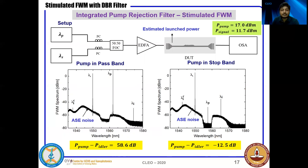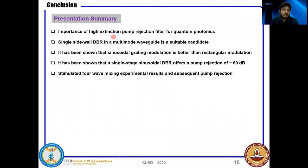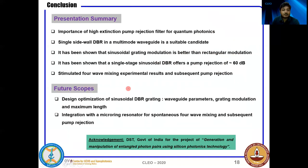In summary, we have addressed the high-extinction pump rejection filter that is very important for integrated silicon quantum photonics. A single sidewall DBR in a multimode waveguide is a suitable candidate, and sinusoidal grating performs better than rectangular modulation. With sinusoidal grating we obtained a pump rejection of maximum 60 dB, and the stimulated 4-wave mixing experiment confirms the pump is effectively rejected. Cascading only two sinusoidal grating stages is expected to yield extinction greater than 100 dB. As future work, we want to further optimize waveguide parameters, cascade multiple stages, study the scaling of extinction ratio, and finally integrate the filter with a microring resonator for spontaneous 4-wave mixing and entanglement measurements.